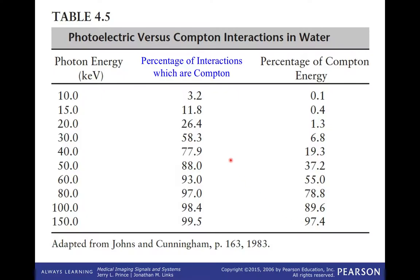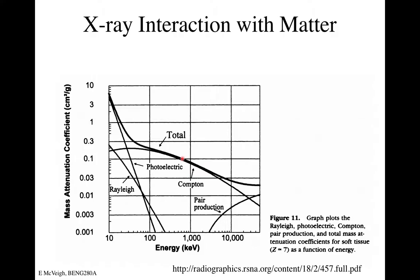Over the set of energies that might come out of our X-ray tube — say 10 keV all the way to 150 keV — as we get up to about 50–60 keV, pretty much all interactions are Compton interactions. By that energy the photoelectric effect is no longer making a significant difference.